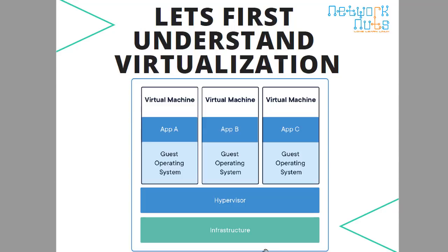Virtualization means you have hardware or infrastructure — very heavy infrastructure like hundreds of GBs of RAM and CPUs, blade servers with Xeon processors and other things. Over that infrastructure you install a hypervisor, like KVM, VMware ESXi, or Microsoft Hyper-V. Over the hypervisor you build a complete virtual machine, and every virtual machine has its own operating system — we call it a guest operating system — consuming its own hard disk, CPU, and physical memory.